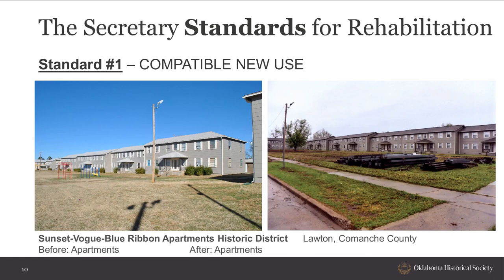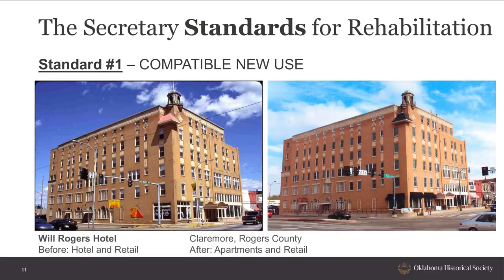The Sunset Vogue Blue Ribbon Apartments Historic District in Lawton is a before-and-after example of the same use with no change at all — by definition, a compatible new use. The Will Rogers Hotel in Claremore is a historic hotel that was rehabilitated into low-income housing. This use is compatible because it allows the building to maintain its historic public spaces while allowing the historic hotel rooms to be reconfigured into apartments.